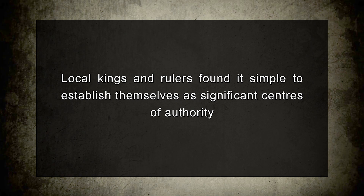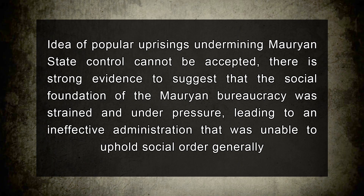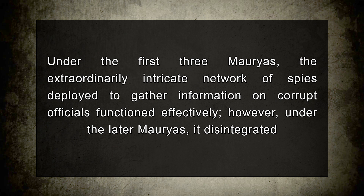Due to this custom of unconditional loyalty, there was a chance that officials would vehemently favor or oppose a new king, a dilemma that later Mauryan kings faced regularly. With historical ties to support them, local kings and rulers found it simple to establish themselves as significant centers of authority. As a result, the subsequent Mauryas' regional governments started to doubt the authority of the center. The extraordinary network of spies deployed under the first three Mauryas functioned effectively, but under the later Mauryas, it disintegrated.